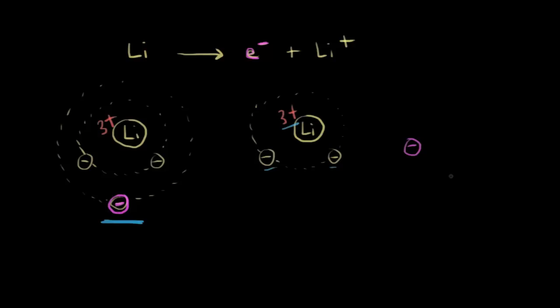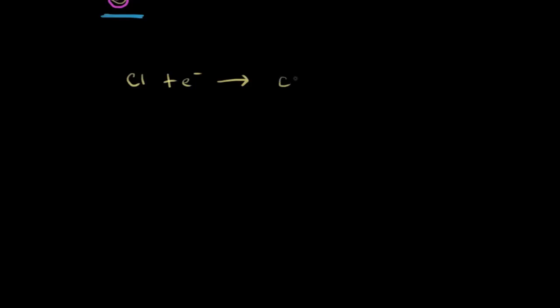We've seen that neutral atoms will shrink when you convert them to cations — if you take away that outer electron, you have three positive charges pulling only two electrons in closer, so it gets smaller. The cation is smaller than the neutral atom. It makes sense that if you take a neutral atom and add an electron, it's going to get larger. So if we take something like neutral chlorine and add an electron, that gives it a negative charge — we'd get the chloride anion. Drawing a representative atom, if this is our neutral chlorine atom and we add an electron, it actually gets a lot bigger — the anion is bigger than the neutral atom.